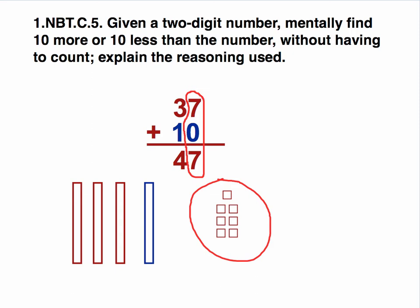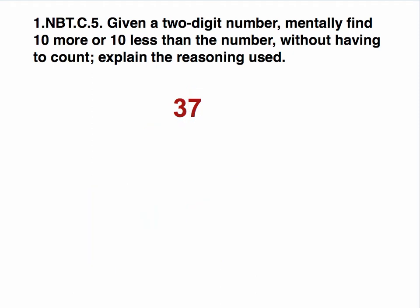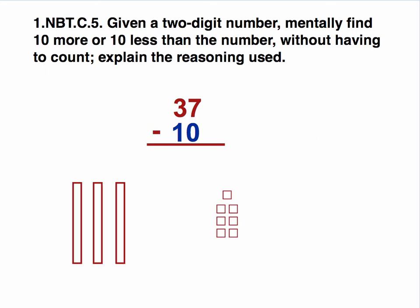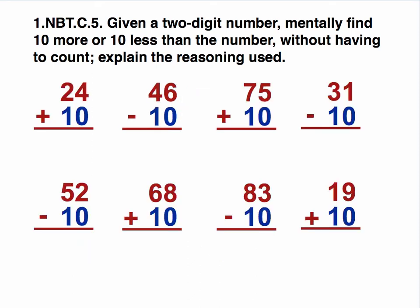A key observation here would be that nothing happened with the 1s since I'm adding 0. Let's take 37 again, but this time we'll subtract 10. And again, visualizing our 3 tens and our 7 ones. All we have to do is just take one 10 away. So we have 2 tens and 7 ones, which is 27. Again, key observation, nothing happened with the 1s.